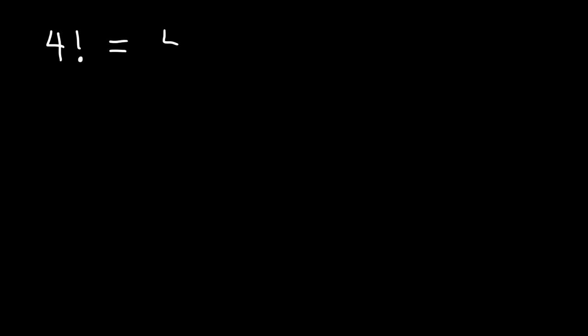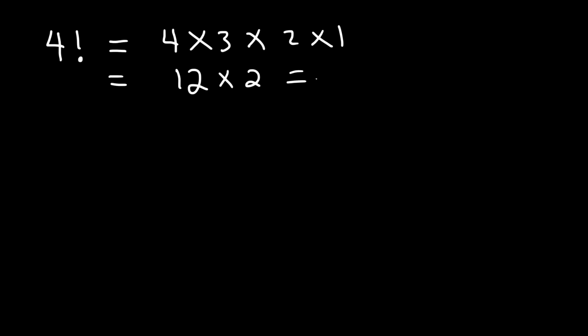In this video we're going to go over factorials. So what is 4 factorial? What is that equal to? 4 factorial is basically 4 times 3 times 2 times 1. So 4 times 3 is 12 and 2 times 1 is just 2, and 12 times 2 is 24. So that's 4 factorial.